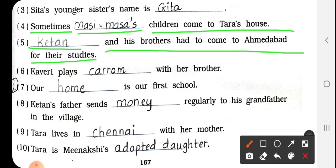Next, number 6: Kaveri plays Dash with her brother. Kaveri अपने भाई के साथ क्या खेलती है? Answer is Karam — C-A-R-R-O-M — Karam (Carrom). Our Dash is our first school.